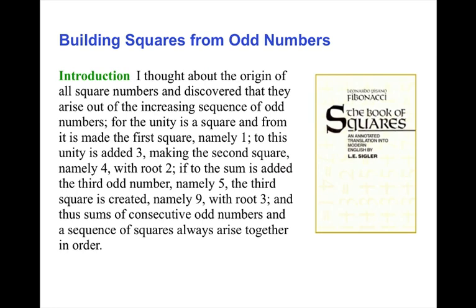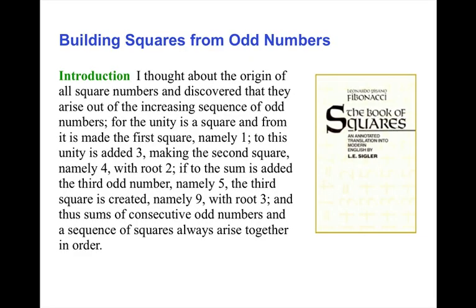I thought about the origin of all square numbers and discovered that they arise out of the increasing sequence of odd numbers, for the unity is a square and from it is made the first square, namely one. To this unity is added three, making the second square, namely four, with root two.